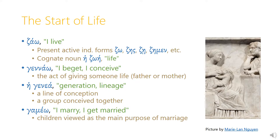A related noun is hegenia, which means 'a generation' or 'a lineage.' This can be either a line of conception — a line of people who are related by conception — or it can be a group of people who were conceived together, a generation, or by extension a group of people who are ethnically related.